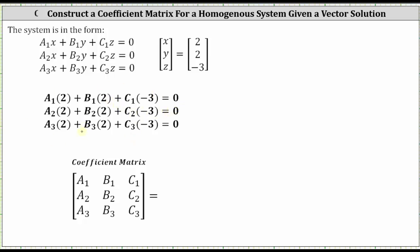Notice the only thing missing would be the coefficients of x, y, and z — and those are what we need to find in order to determine a possible coefficient matrix. The only restriction is that we cannot use all zero coefficients. For the first equation, if we let a sub one equal one and b sub one equal negative one, we would have two plus negative two, which is zero, and therefore we can let c sub one equal zero.